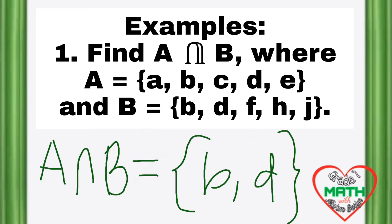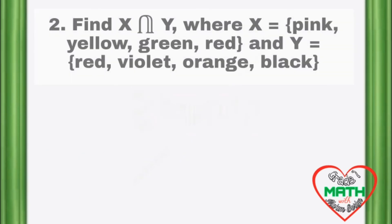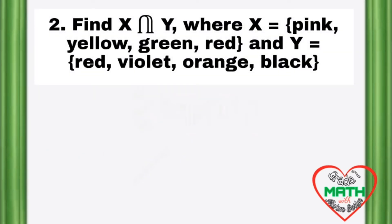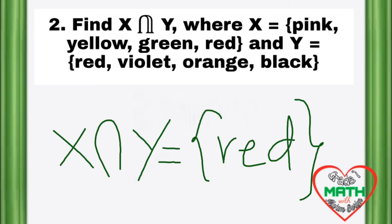A intersection B is equal to {B, D} because these are the only elements common to sets A and B. Find X intersection Y where X is equal to {pink, yellow, green, red} and Y is equal to {red, violet, orange, black}. X intersection Y is equal to {red}. Only the element red is common to both sets.